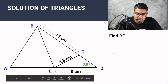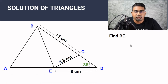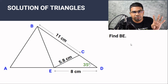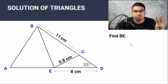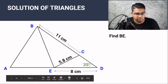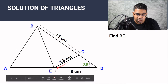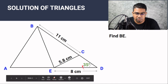We have triangle ABD and we have three lengths given to us as well as one angle. The question is to find BE. If you look at this diagram carefully, we have the big triangle ABD but we also have many other smaller triangles within it. We have triangle ABE, triangle BEC, as well as triangle CED. So altogether we have four triangles.